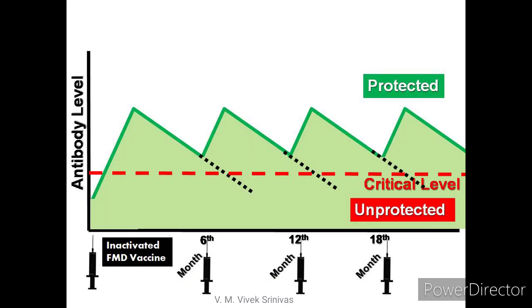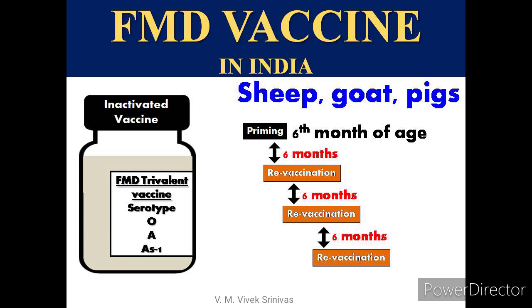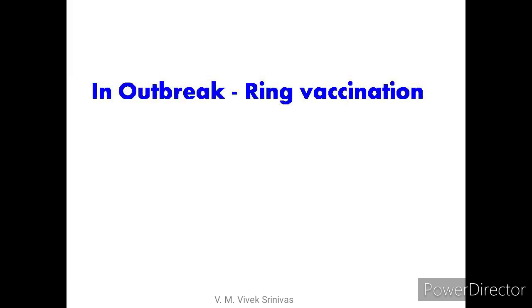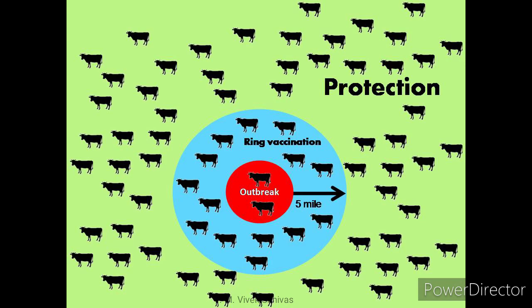The inactivated vaccine confers only humoral immunity, so the immune response lasts for a shorter period. Revaccination every 6 months maintains the animal in the protective zone above the critical level. In sheep, goats, and pigs, primary vaccination is done at 4 months of age with a dose of 1–2 mL per animal. In an FMD outbreak situation, ring vaccination is followed — vaccination of animals within a 5-mile radius within 5 days — which indirectly provides herd immunity to the susceptible population.